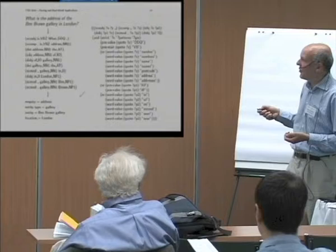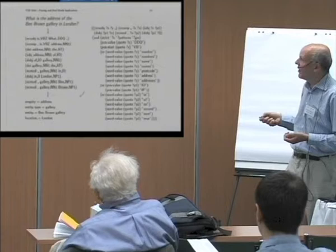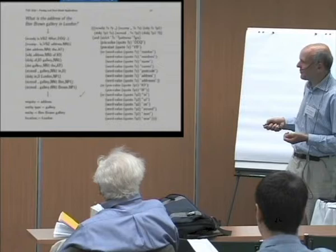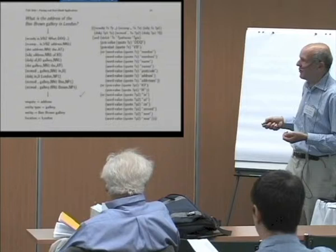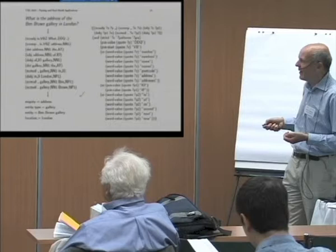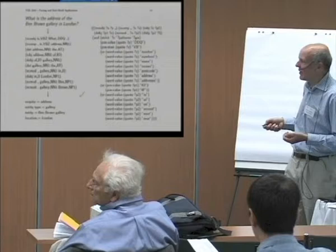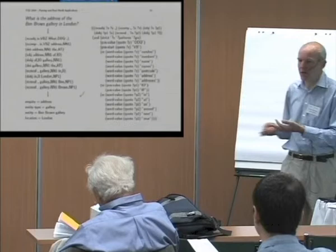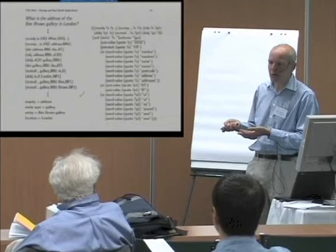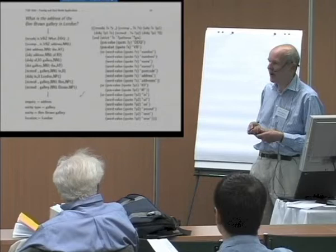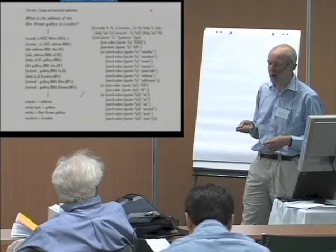We automatically parse the incoming text message, get a dependency analysis, match it against the rules, and extract what we're interested in. For example, for an address-type inquiry, we extract that it's looking for a gallery type, named 'Ben Brown Gallery', in London. This is processed further to produce a directory inquiry query, sent to a number of directories. An answer comes back, is automatically composed, sent for manual checking, and then returned to the original inquirer.